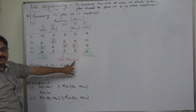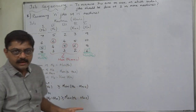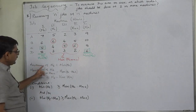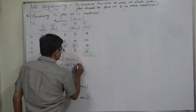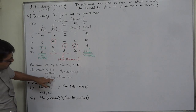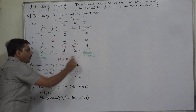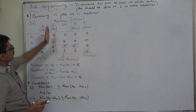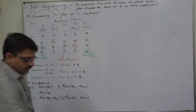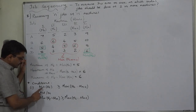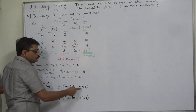From machine two to machine M minus one, select the highest time. Now we can check the conditions, which are similar to those in the case of three machines. The minimum time on machine one is five, the minimum time on the last machine (machine five) is six, and the maximum time out of all machines except first and last is six. Condition one: the minimum time on machine one should be greater than or equal to the maximum time on machines two to M minus one.